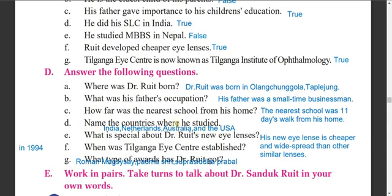D - name the countries where he studied. He studied in India, Netherlands, Australia, and the USA. E - what is special about Dr. Rohit's new eye lenses? His new eye lens is cheaper and more widespread than other similar lenses. It is more simply produced than others and is also used in more than 60 countries.